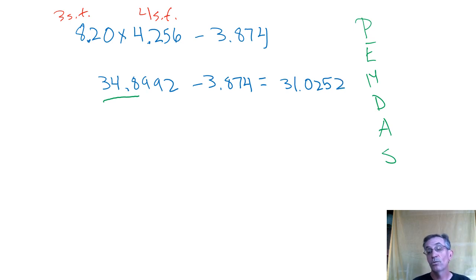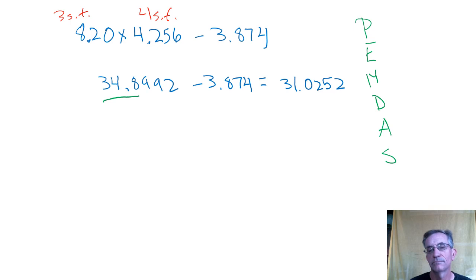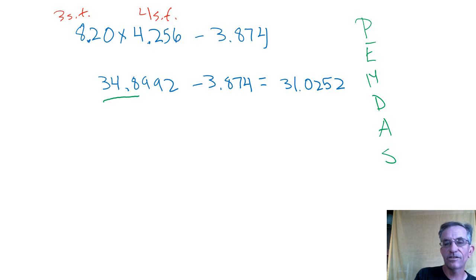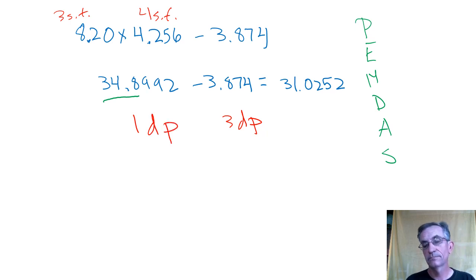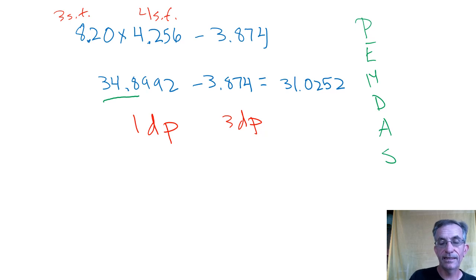Now we've got to think about the rounding in this second step. You're subtracting — so sig figs or decimal places? Decimal places. In our new number (3.874), there are three decimal places. In the underlined part of the first number — 19.8, which had one decimal place — there is one decimal place. You're going to round that to one decimal place. The answer is 31.0.